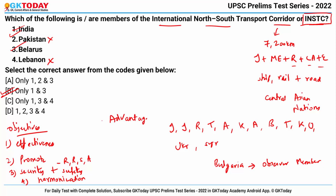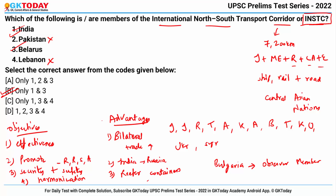The fourth objective is harmonization of transport policies. Key advantages of INSTC include: bilateral trade increases; it connects India to Russia at competitive rates; it eliminates usage of reefer containers; and this route is 30% cheaper and 40% shorter than the traditional one.